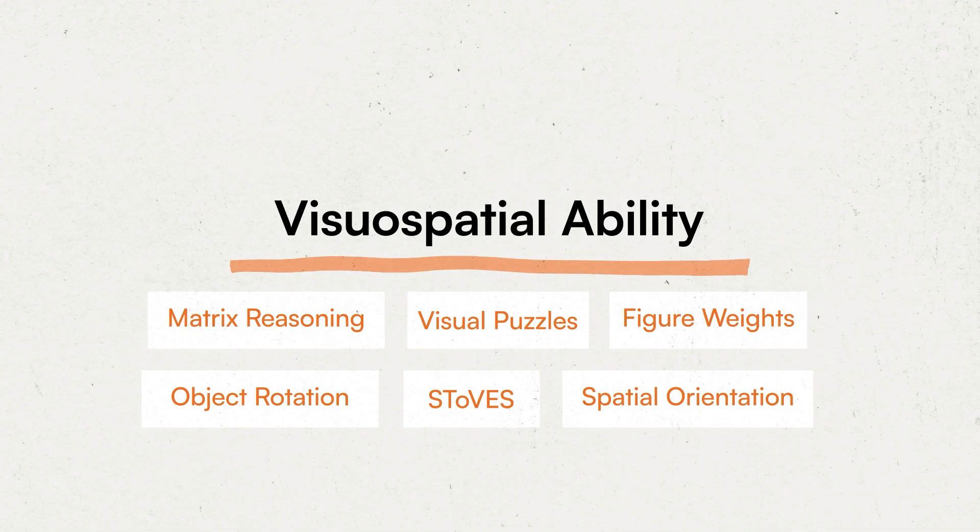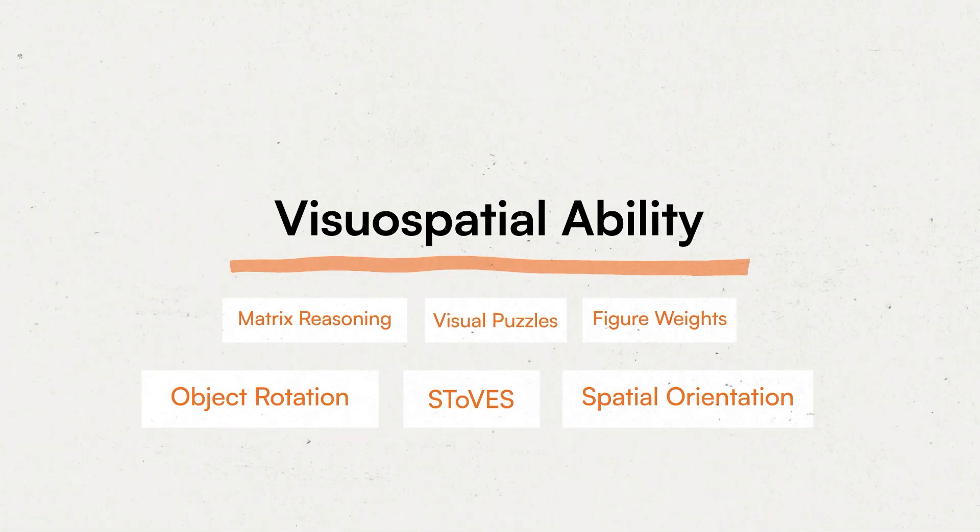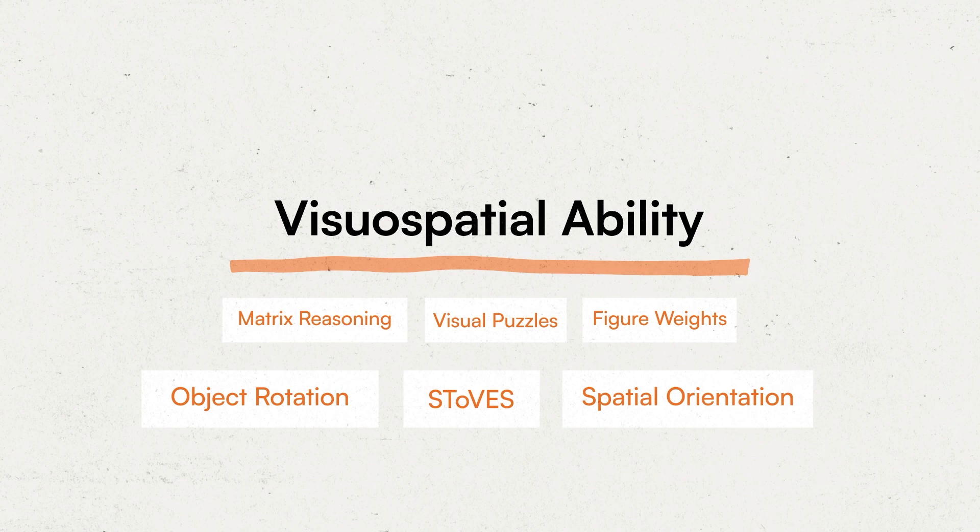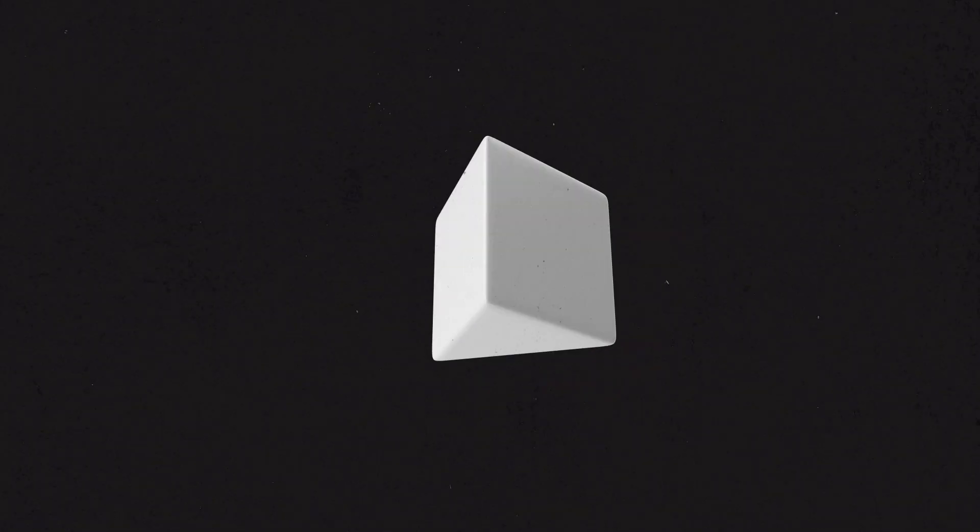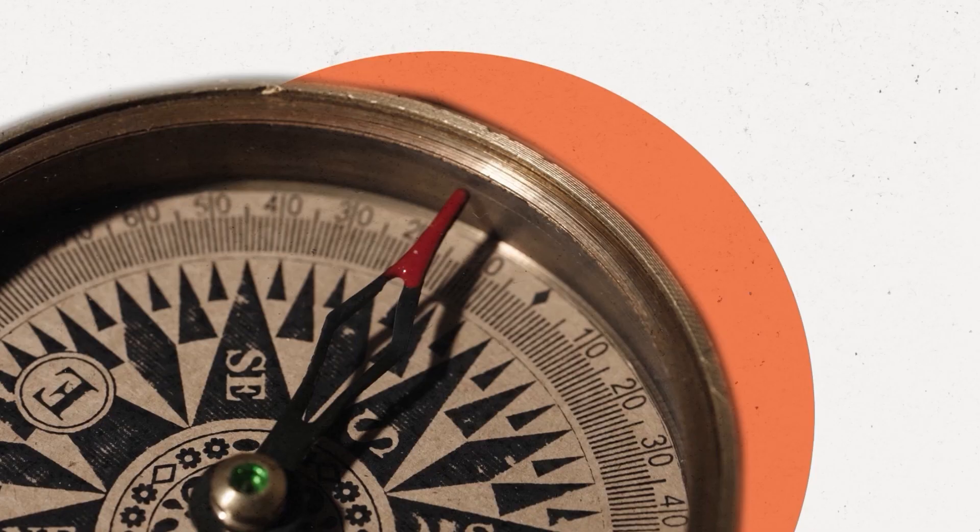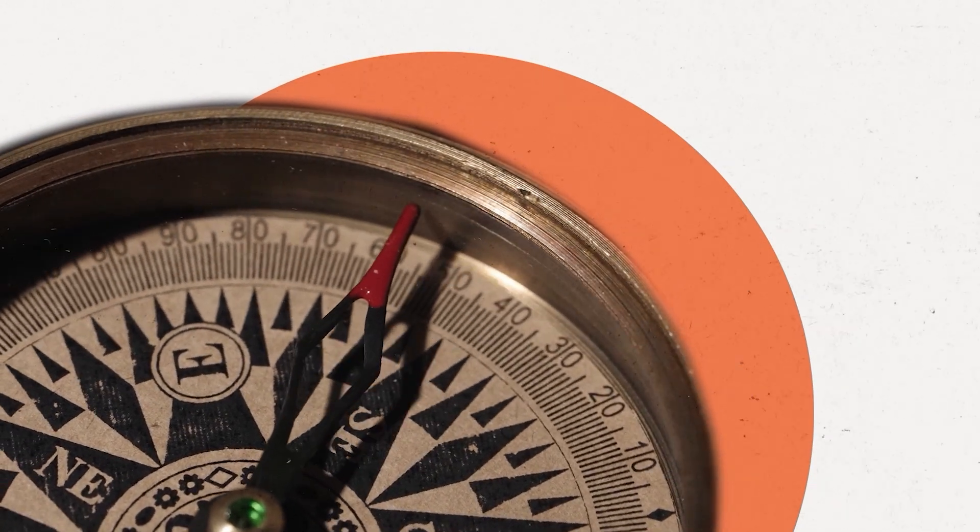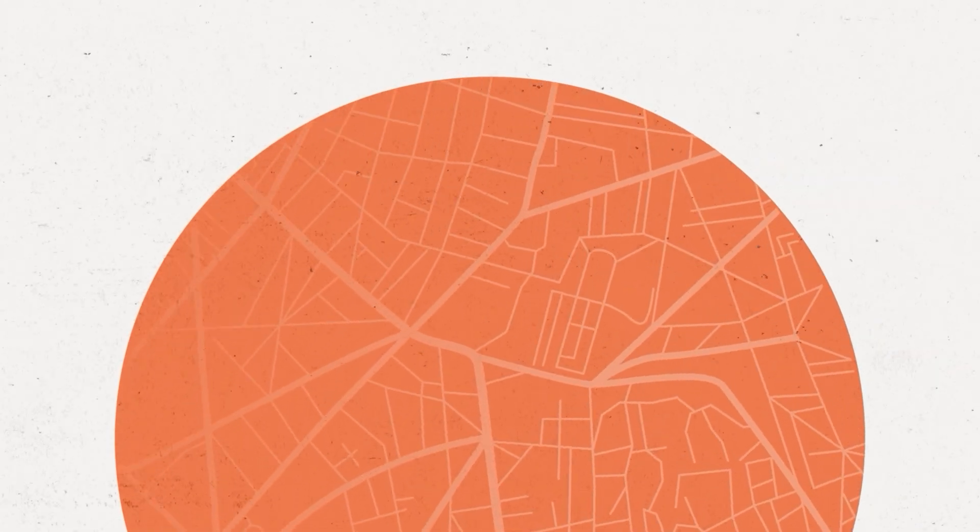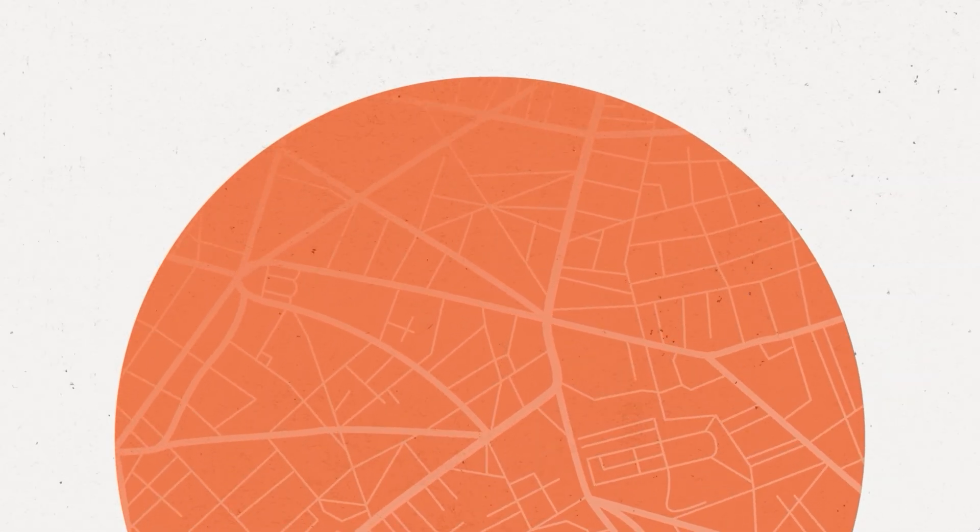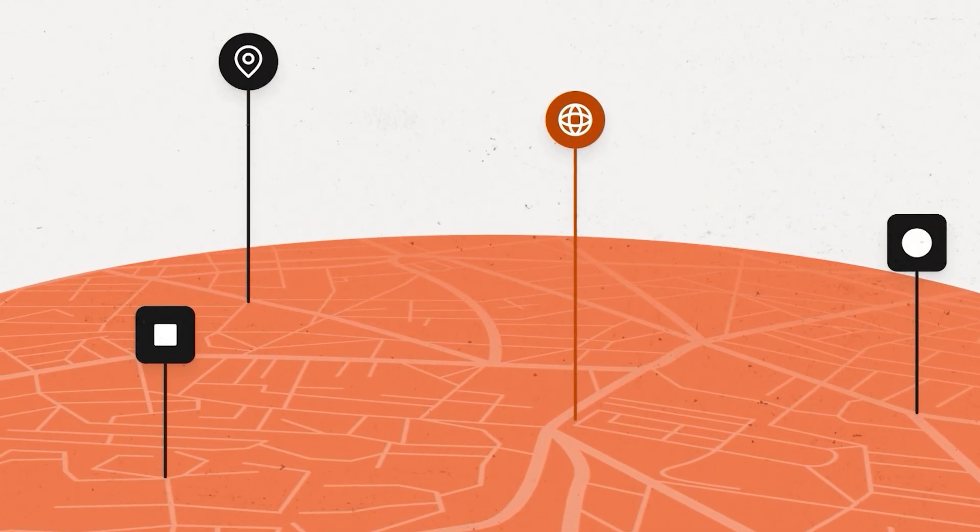The last three subtests in the Visual Spatial Ability Index are the Object Rotation subtest, the Spatial Tests of Verbal Stimuli, and the Spatial Orientation subtest. All of these subtests measure the ability to think about two- or three-dimensional space. In the Object Rotation subtests, examinees must identify which of five options is a rotated version of a target shape. In the Spatial Tests of Verbal Stimuli, test takers must answer questions about their understanding of the cardinal directions. Finally, in the Spatial Orientation subtests, examinees are tested on how well they can understand how maps represent two- and three-dimensional space.